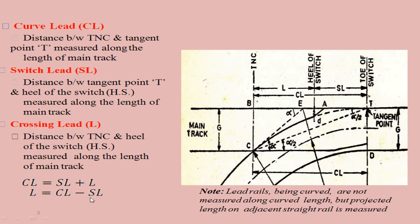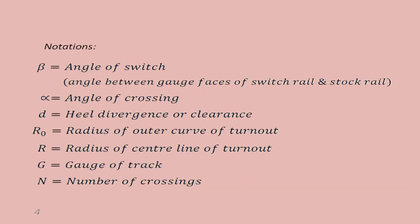The different notations used for calculations: beta is the angle of switch — the angle between gauge faces of switch rail and stock rail. Alpha is the angle of crossing, whether acute or obtuse. D is the heel divergence or clearance — the distance between stock rail and the tongue rail. R-naught is the radius of the outer curve of turnout, and R is the radius for the center line of turnout. G is the gauge of track and N is the number of crossing.